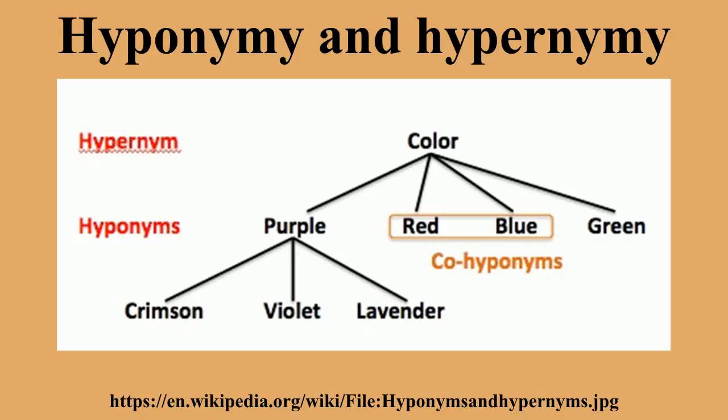Co-hyponyms: if the hypernym z consists of hyponyms x and y, then x and y are identified as co-hyponyms. Co-hyponyms are labeled as such when separate hyponyms share the same hypernym but are not hyponyms of one another, unless they happen to be synonymous. For example, screwdriver, scissors, knife and hammer are all co-hyponyms of tool, but not hyponyms of one another.